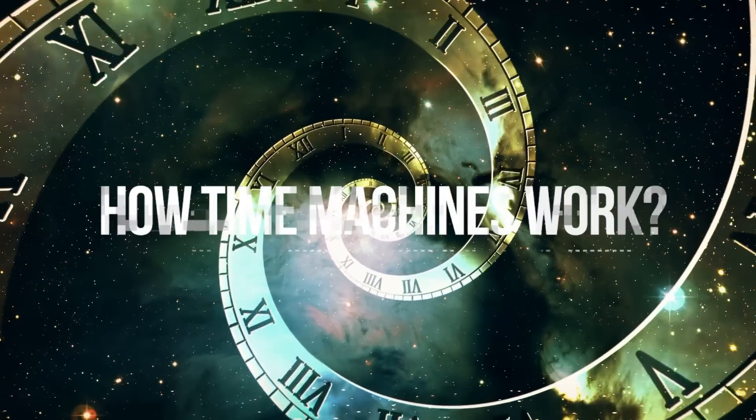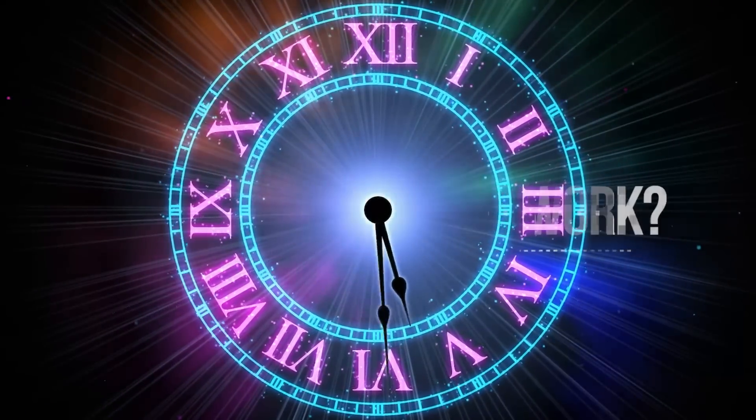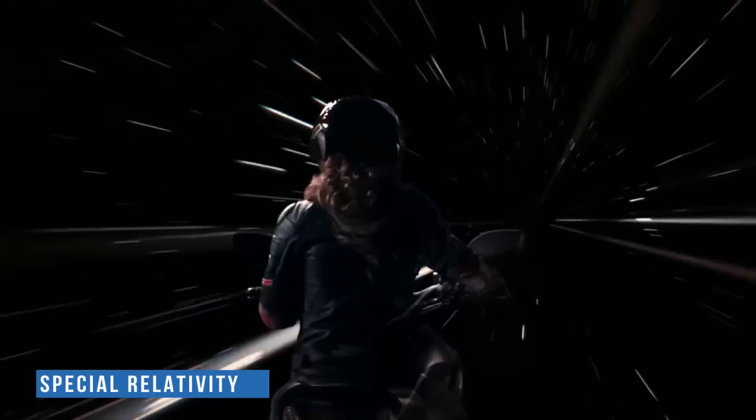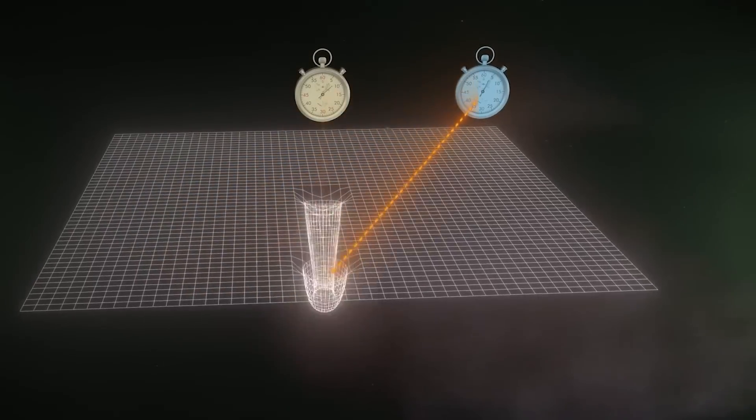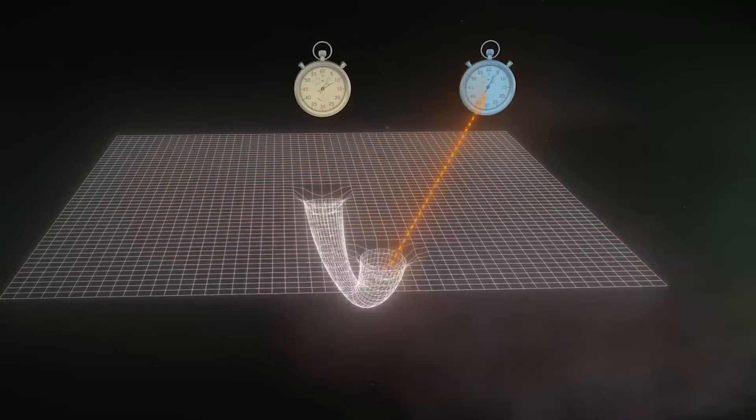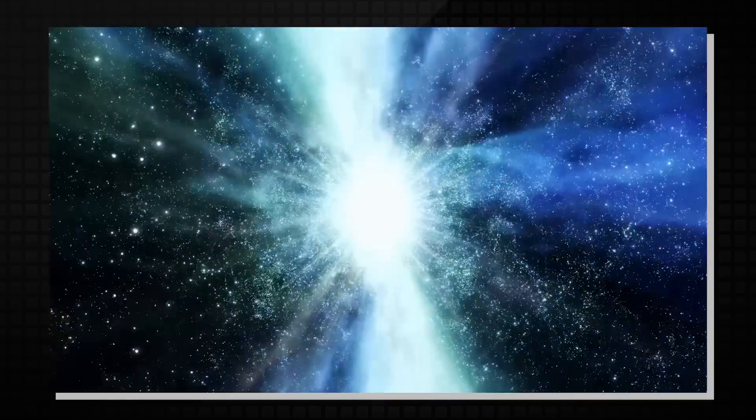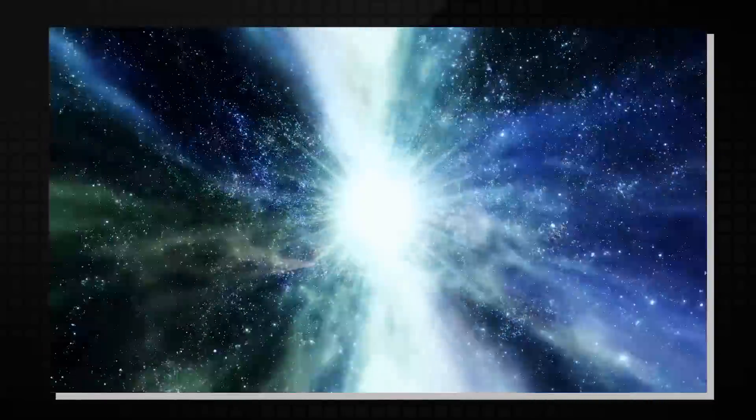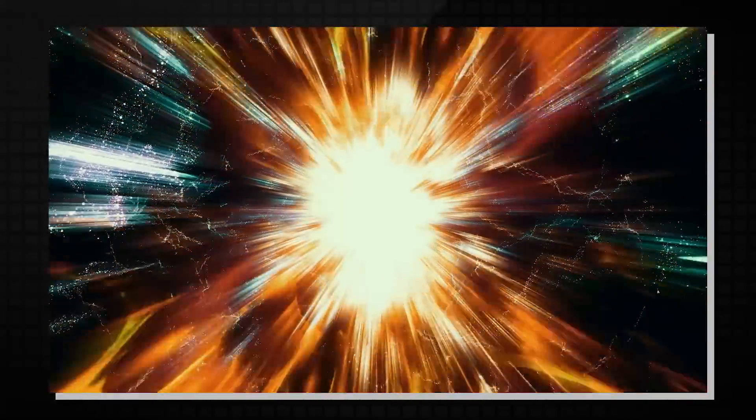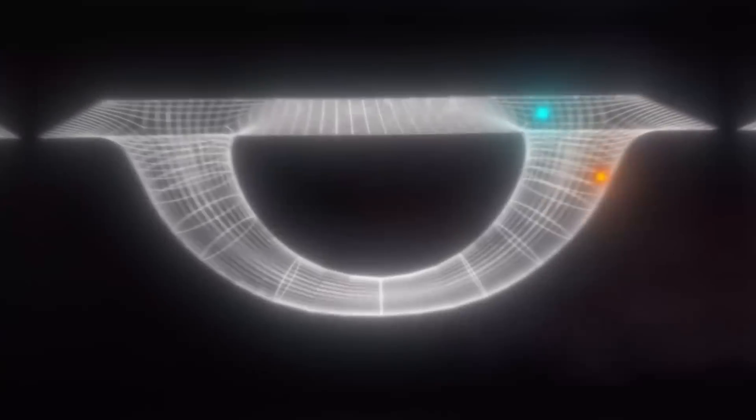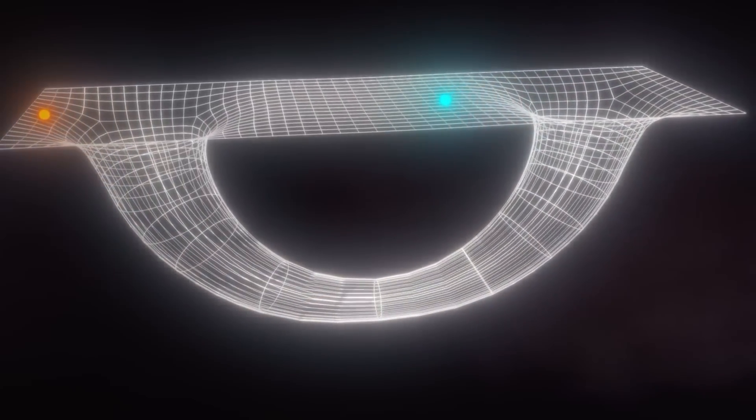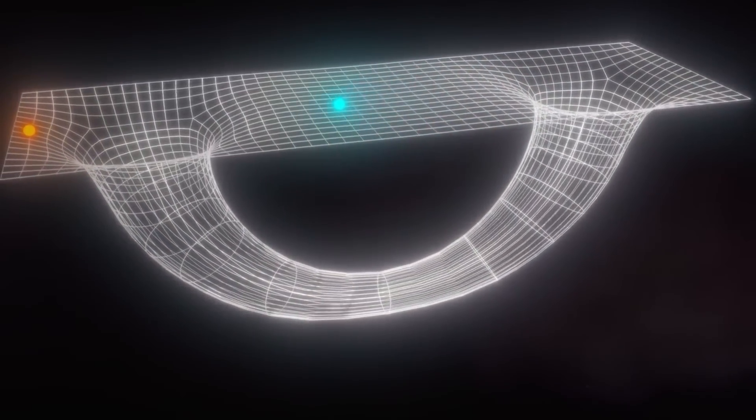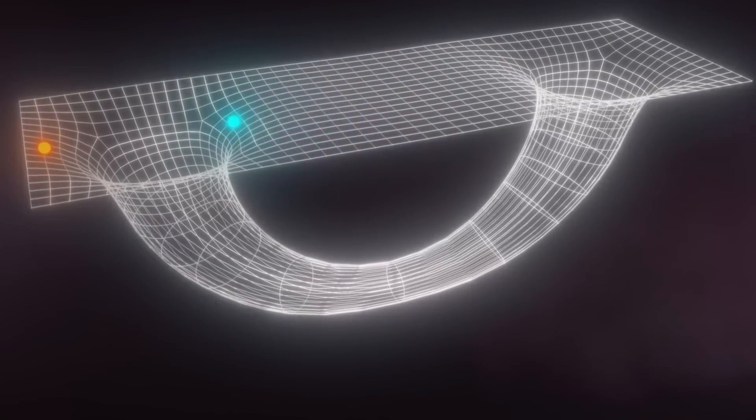Have you ever wondered how time machines work? Moving clocks operate slowly, according to special relativity. Thus, a person traveling at the speed of light would not move in time relative to a stationary observer, as quickly as the two would be initially synchronized. You can go back in time by creating a wormhole, then accelerating one end to nearly the speed of light, causing it to lag behind the other entrance. Then you can bring the two entrances together, but one of them will be in the past of the other.